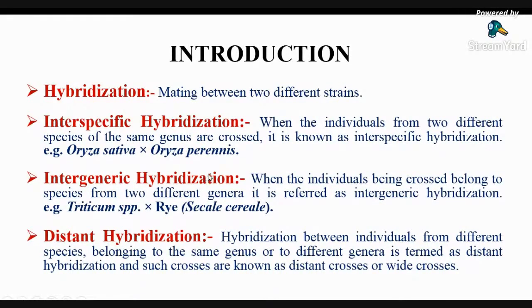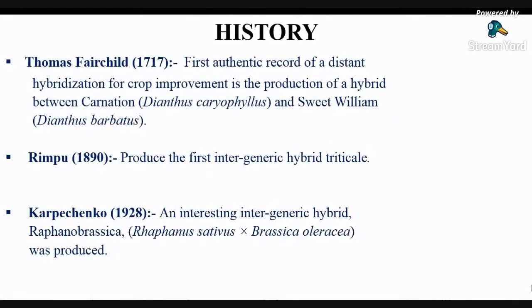For example, production of triticale by crossing Triticum species with Secale cereale is an example of inter-generic hybridization. Both inter-specific and inter-generic hybridization are included under distant hybridization, which means hybridization between individuals from different species belonging to the same genus or to different genera.